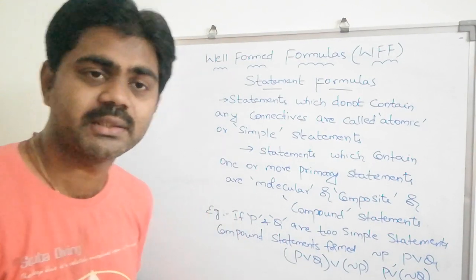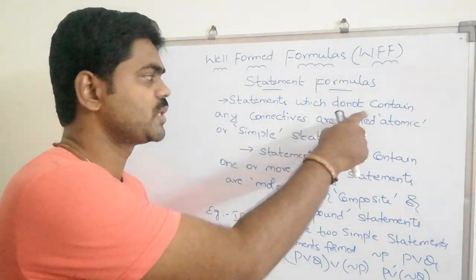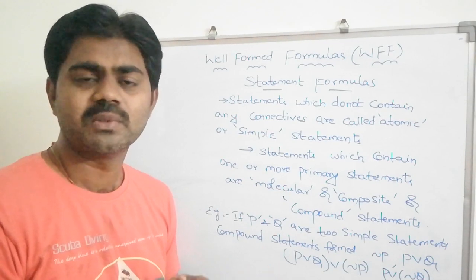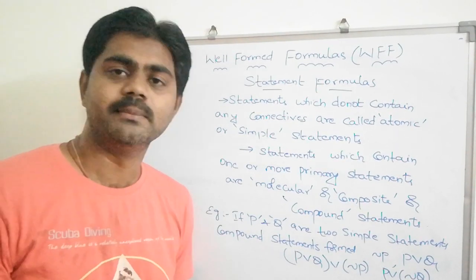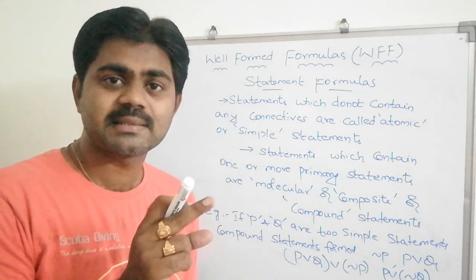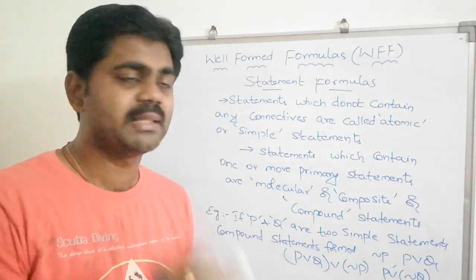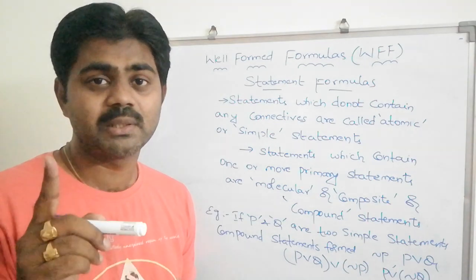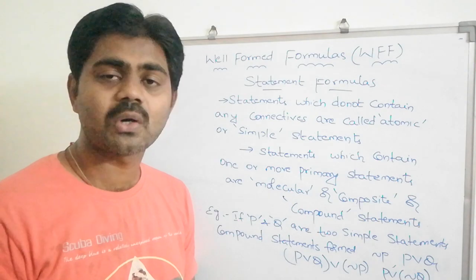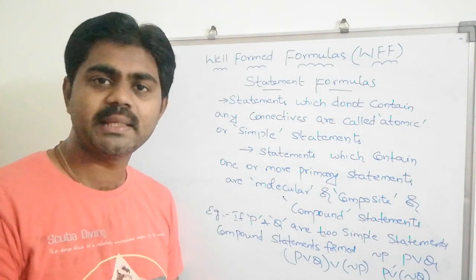Statements which do not contain any connectives are called atomic statements or simple statements. For example, P ("it is raining") is a single statement. You might wonder about negation P — even though it looks single, it contains a connective. So negation P is not an atomic statement. Perfect examples of atomic statements are P, Q, R, and so on.